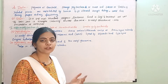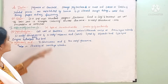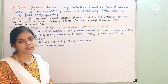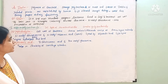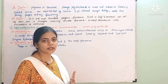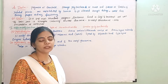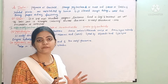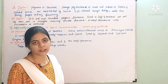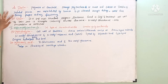Inulin is another homopolysaccharide component. It is used to test proper kidney functioning. Inulin is the component used for testing the kidney.